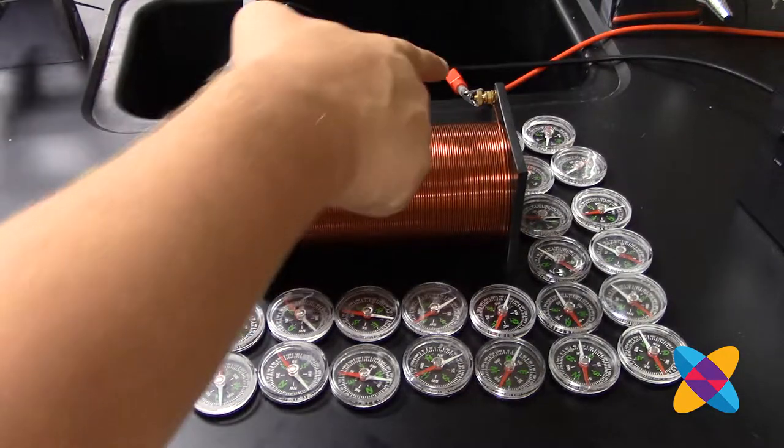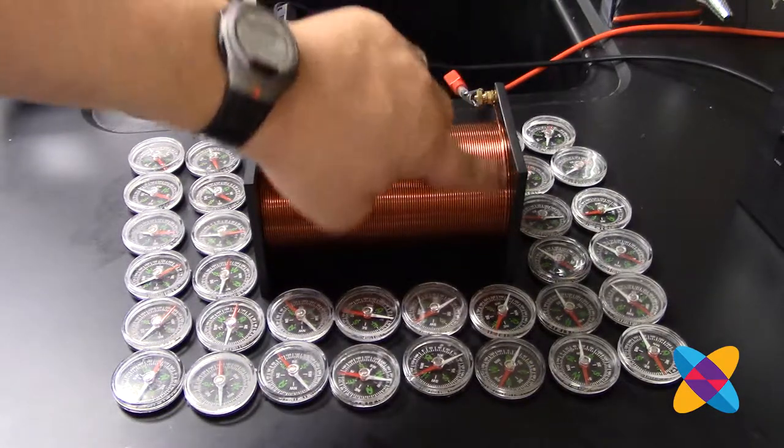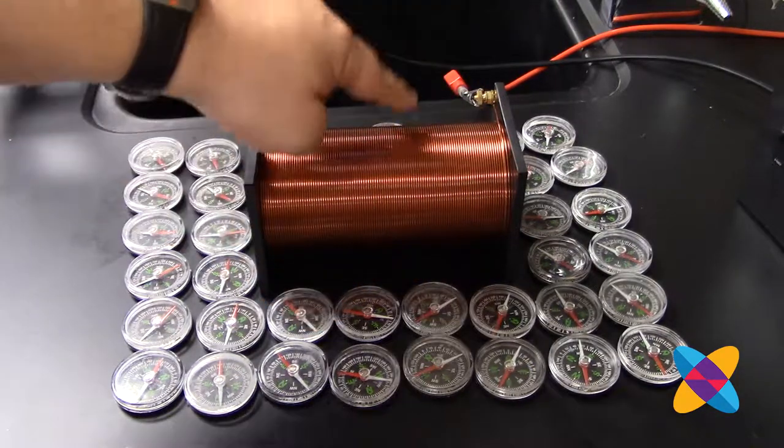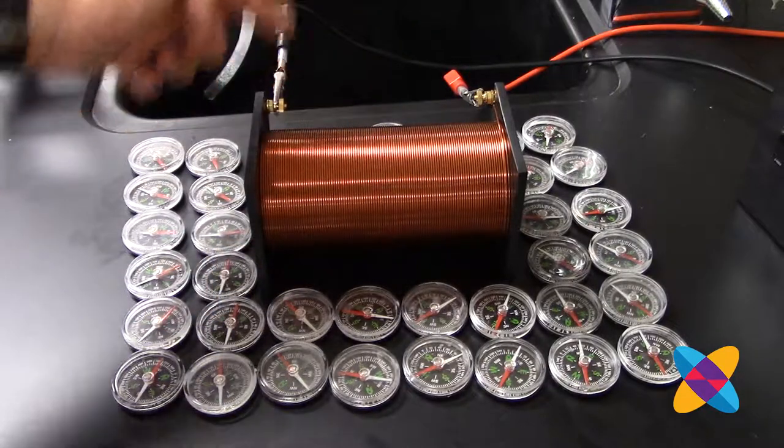So the current - and I don't know if you can see this - the current is coming in from the red, and then the current is going this way through the coils. So the current is going this way through the coils, and then into the black and out.